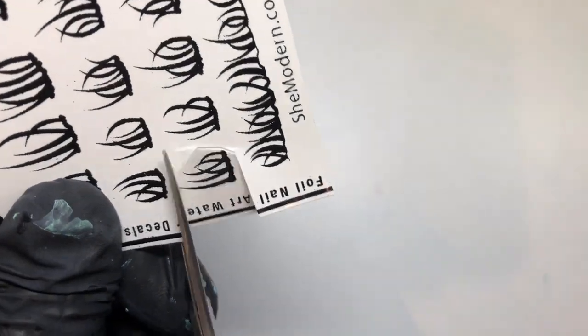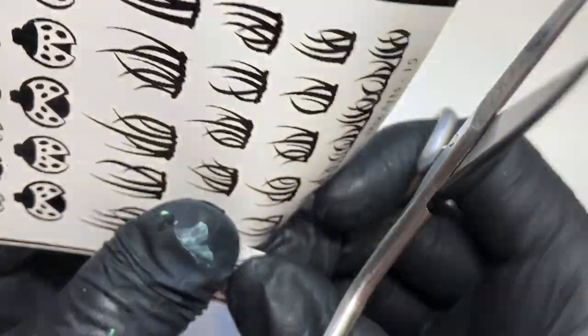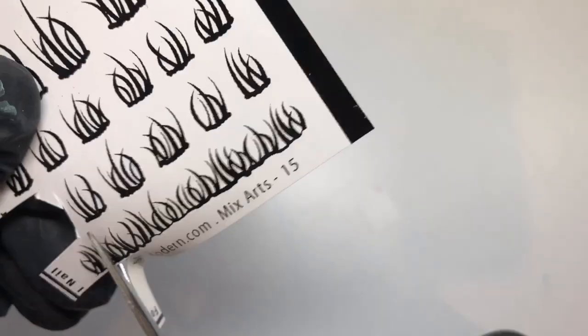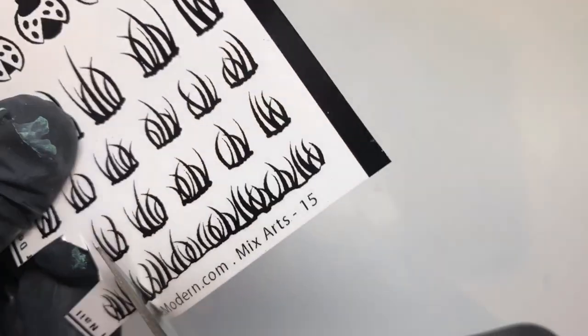It's really simple to achieve. You just want to cut out the parts of the foil that you want. It's important to remove that film as well that I showed you, otherwise the decal won't remove from the backing properly.